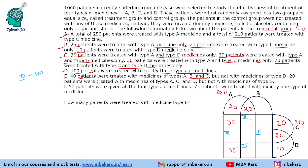20 patients were treated with A, C and D — so that region is 20. Last condition says 50 patients were given all 4 types of medicine — that is the central region, and it is 50.